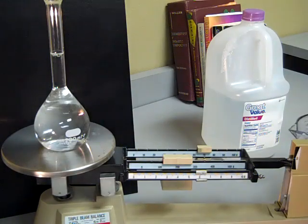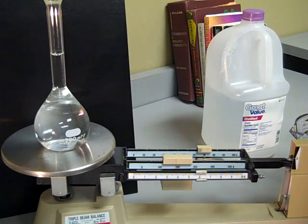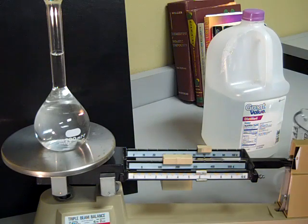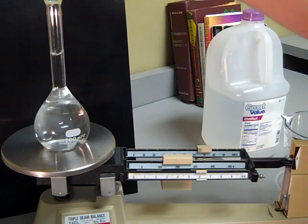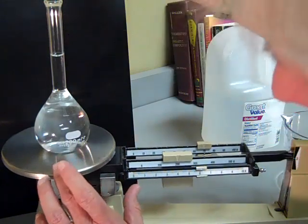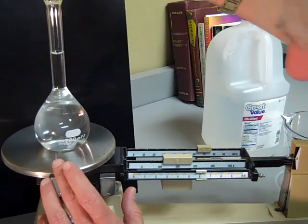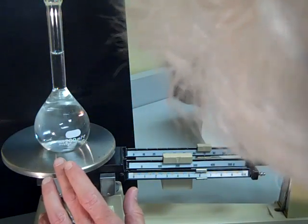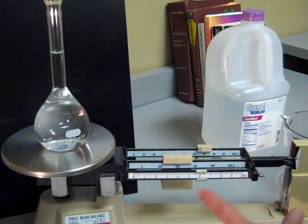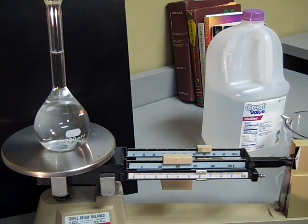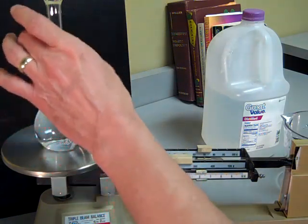And we're pretty close, so what I'm going to do is use a dropper. We want to get right to that line and not go over. I think we're pretty close and there. That is right on the mark and you can see on the scale we don't have 200 grams. We have a little less, which means that the liquid in this flask has expanded.